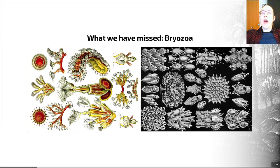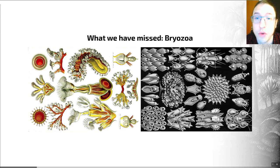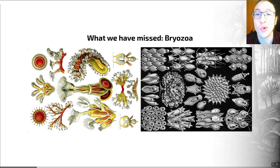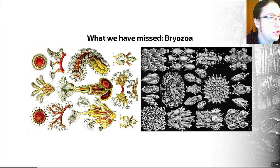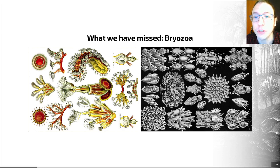Let's move onwards and look at the Bryozoa. Once more we have some beautiful images by Ernst Haeckel. Bryozoans are colonial invertebrates with lophophores — in fact they're the only phylum of animals in which all species are colonial. Many of their skeletons are beautifully designed, as you can see in this image: these are colonies of bryozoan, and each individual — called a zooid — has a beautifully evolved form.